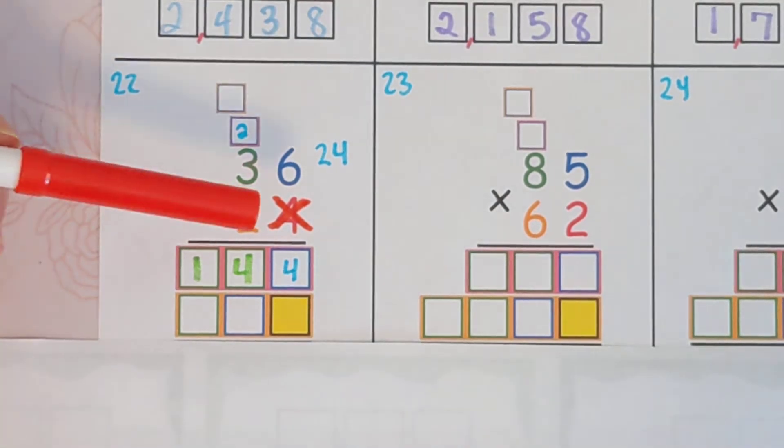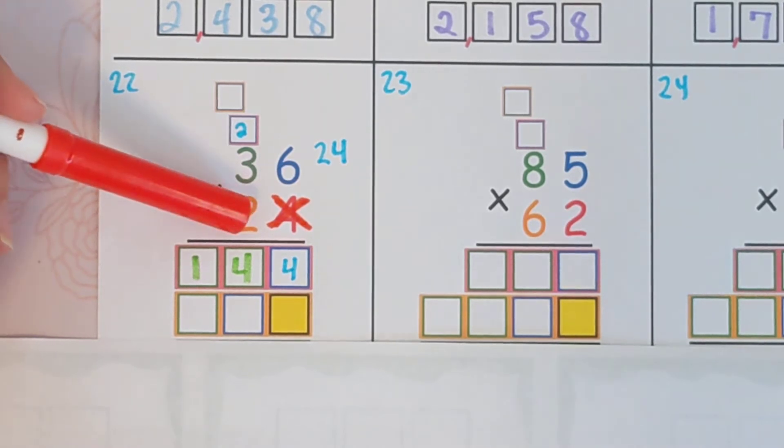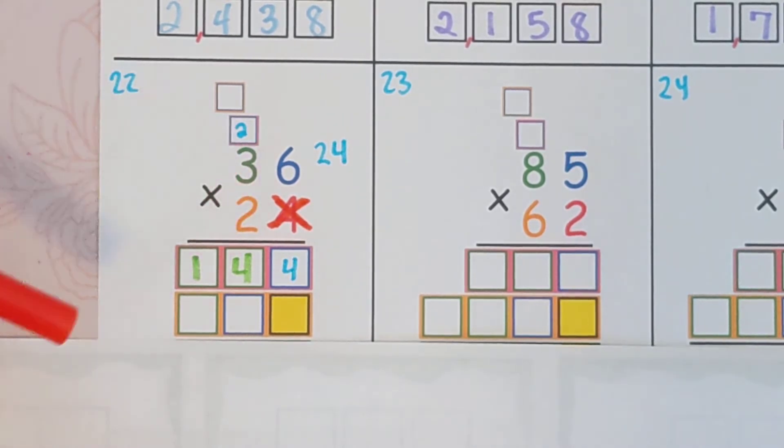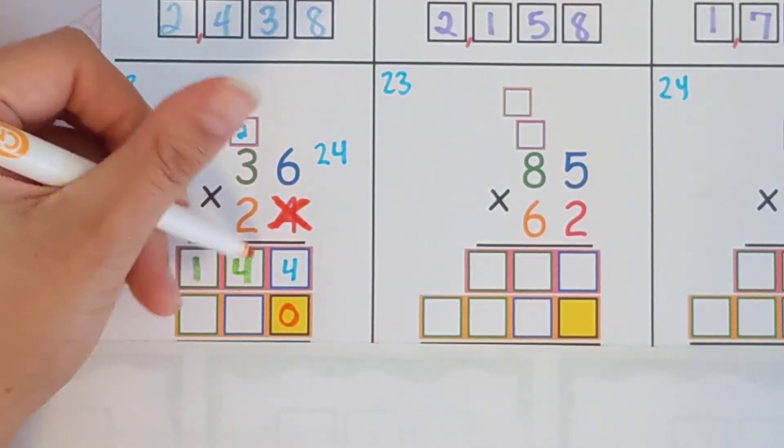Now you're just going to do the whole process again on a lower level. But this time you're doing two times 36, except it's not actually a two. This is a 20. You're doing 20 times 36. Well, all you need to do to show that it's a 20 is put a zero here.